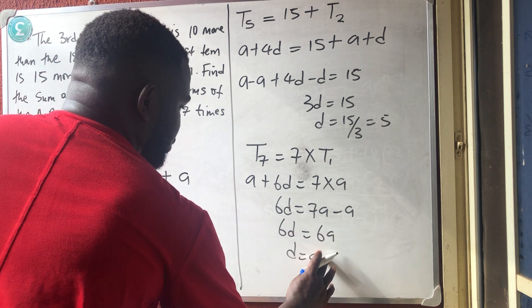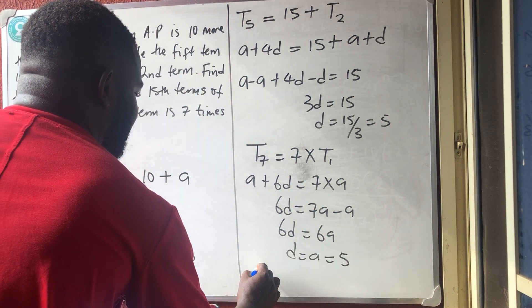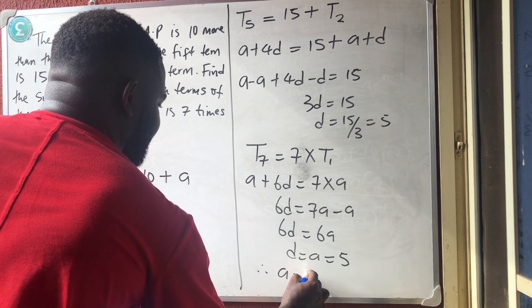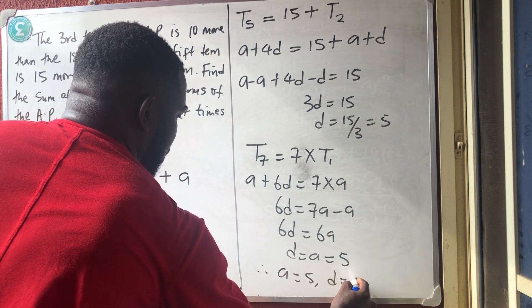And I've gotten D before. So, this thing is equal to 5. So, which implies that the first term is 5 and the common difference is equally 5. Okay?